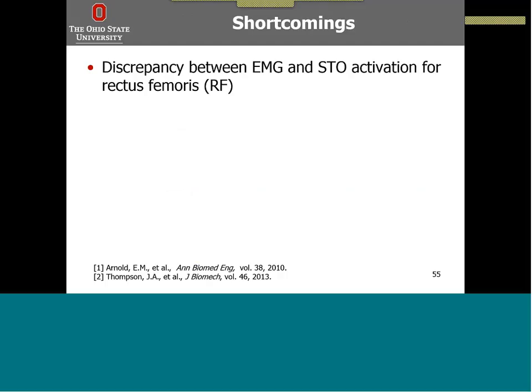Looking at the percent differences and their standard deviations, some of them are greater than the percent difference averages, indicating large variability. Also, the percent differences in general are greater than 10%, indicating that we cannot assume lower limb muscle symmetry even in a young healthy population.